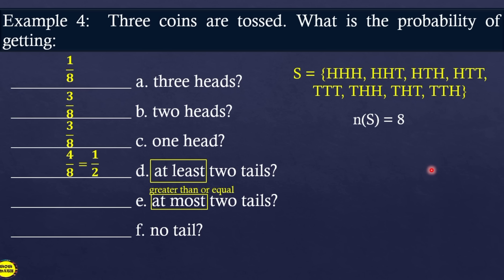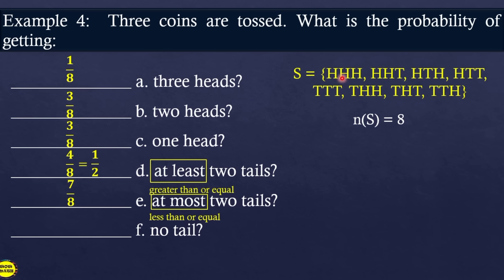What is the probability of getting at most 2 tails? 'At most' means less than or equal to, so that is 2 tails or fewer (including 0 tails). Counting outcomes with 0, 1, or 2 tails, there are 7 such outcomes. Therefore, probability = 7 over 8. And what is the probability of getting no tail? That is only 1 outcome (HHH), so probability = 1 over 8.